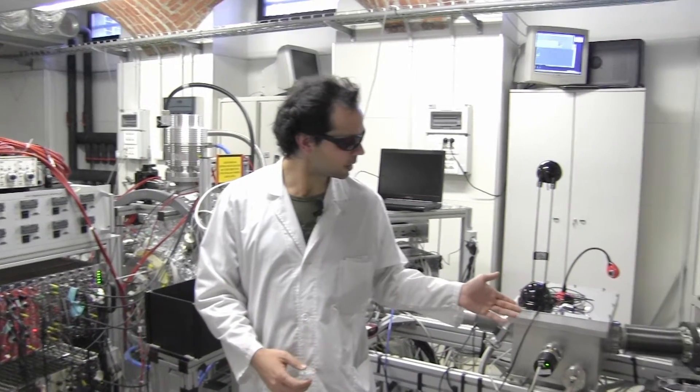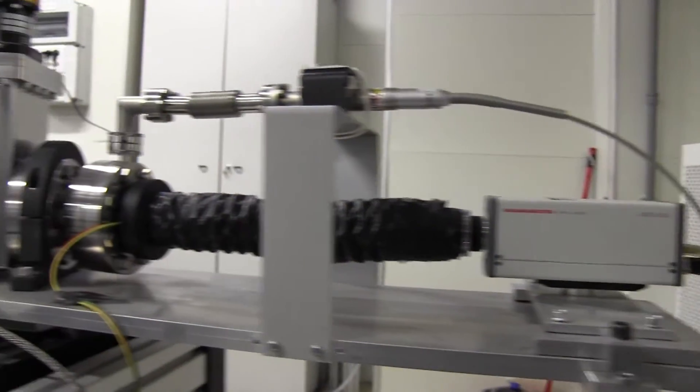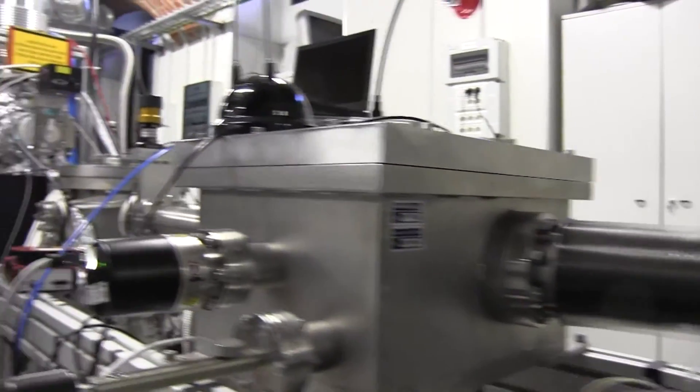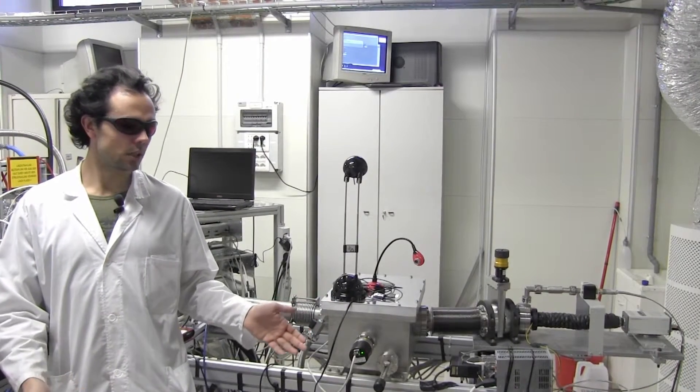On my left, here, there is the XUV spectrometer, which helps to keep monitored all the time the XUV radiation. Now, let's give a couple of examples of the experimental capabilities of the laboratory.